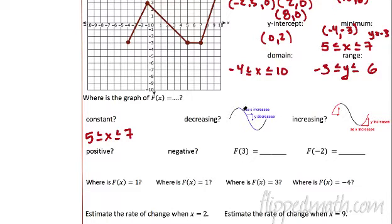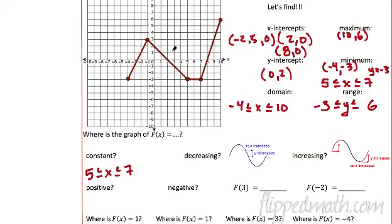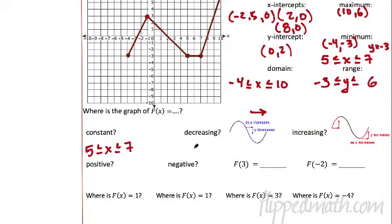Decreasing means as x increases, y decreases — it's going downhill as you go from left to right. Students will get confused because they'll go the opposite way and don't know what's going up and what's going down. We're always traveling to the right. This graph decreases from here — you go downhill to here. The rest of it is either staying constant or increasing. So we're going to write the domain down: this occurs from negative one all the way to five. From negative one to five, x has to be in between — that's where it's decreasing.